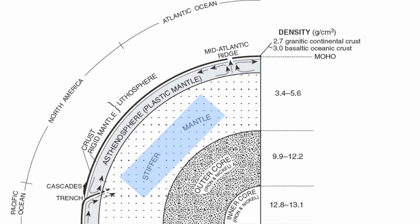Below that you have the stiffer mantle. Below that you have the outer core, made up of liquid iron and nickel. Below that you have the inner core, made up of solid iron and nickel.